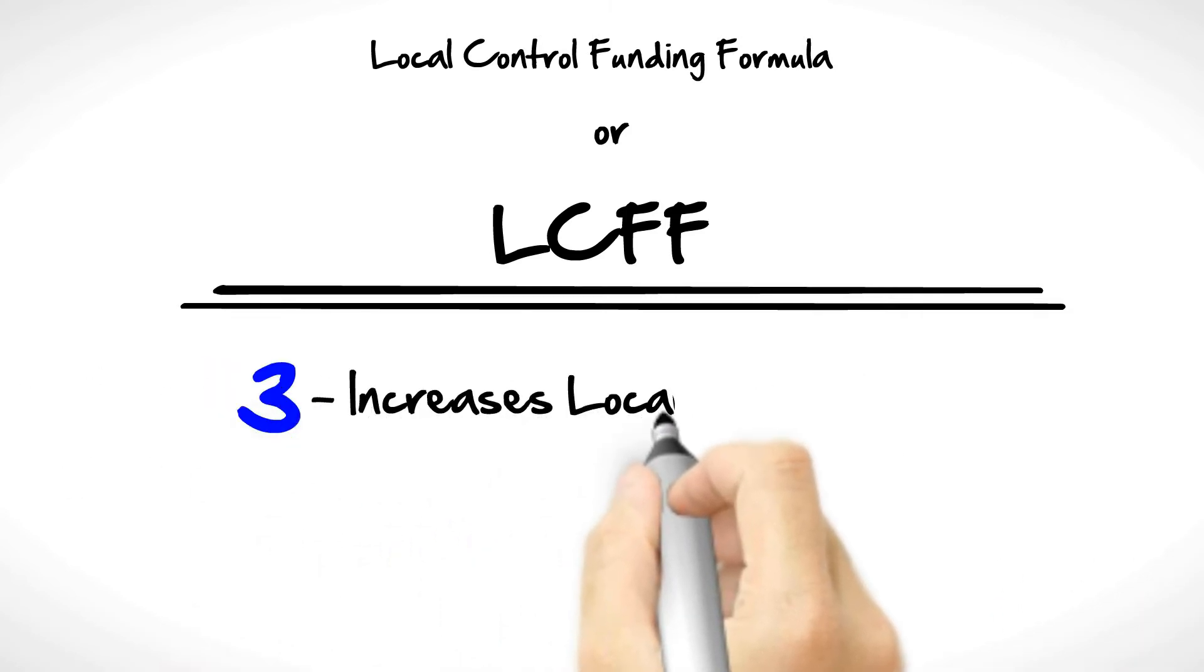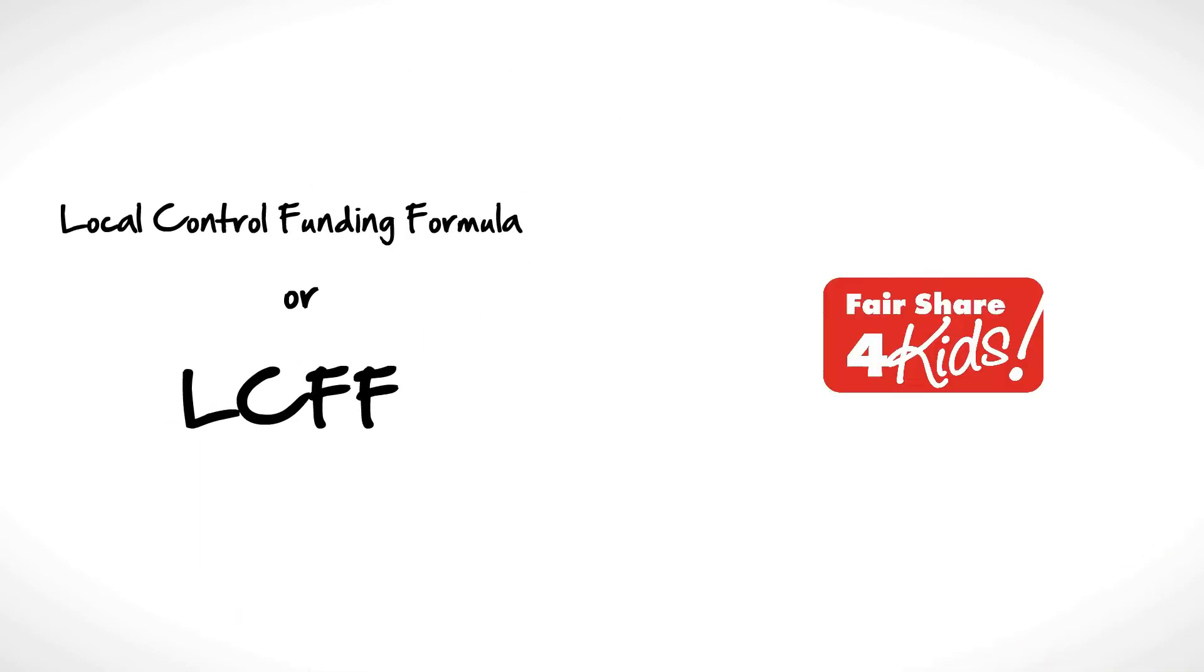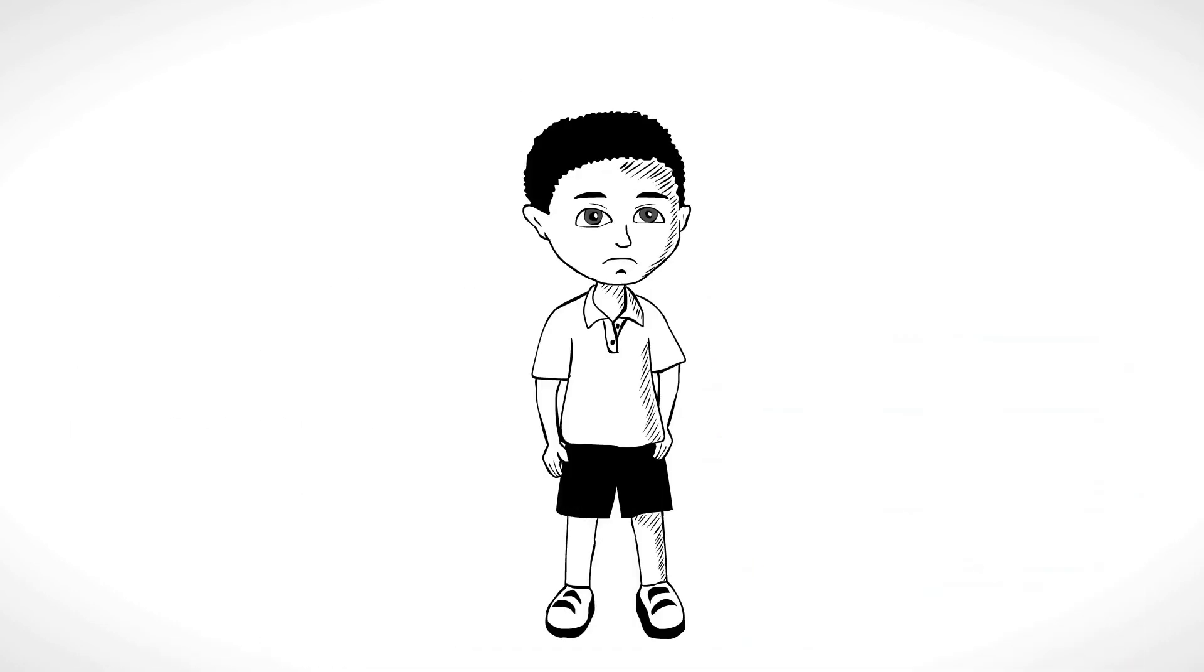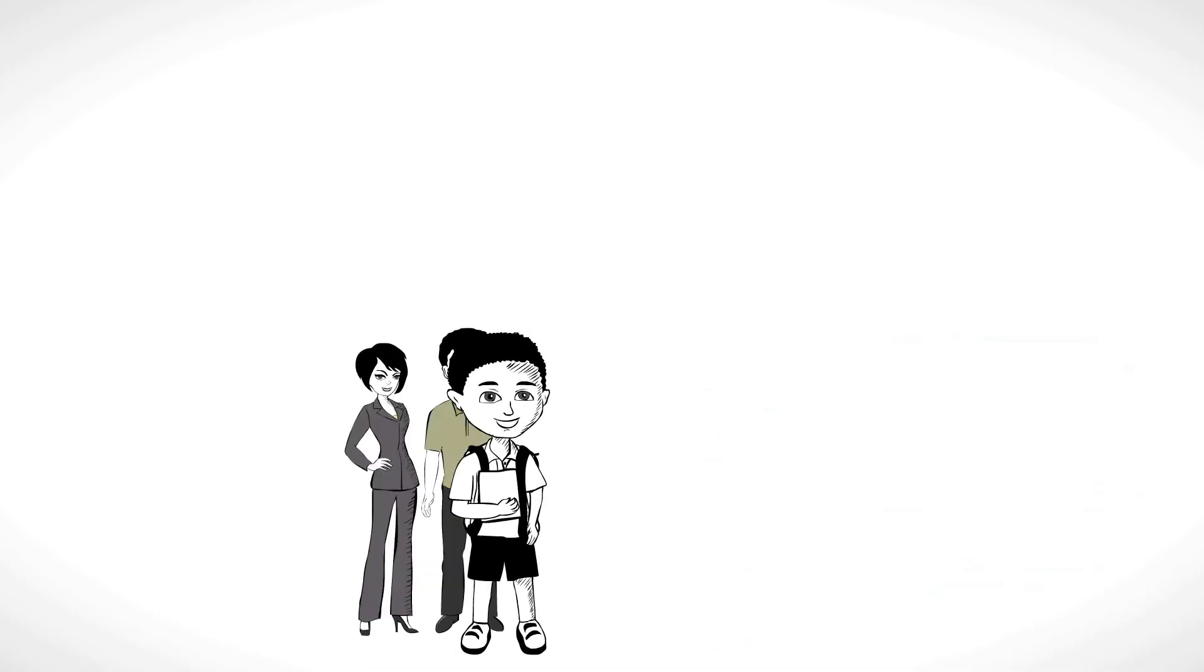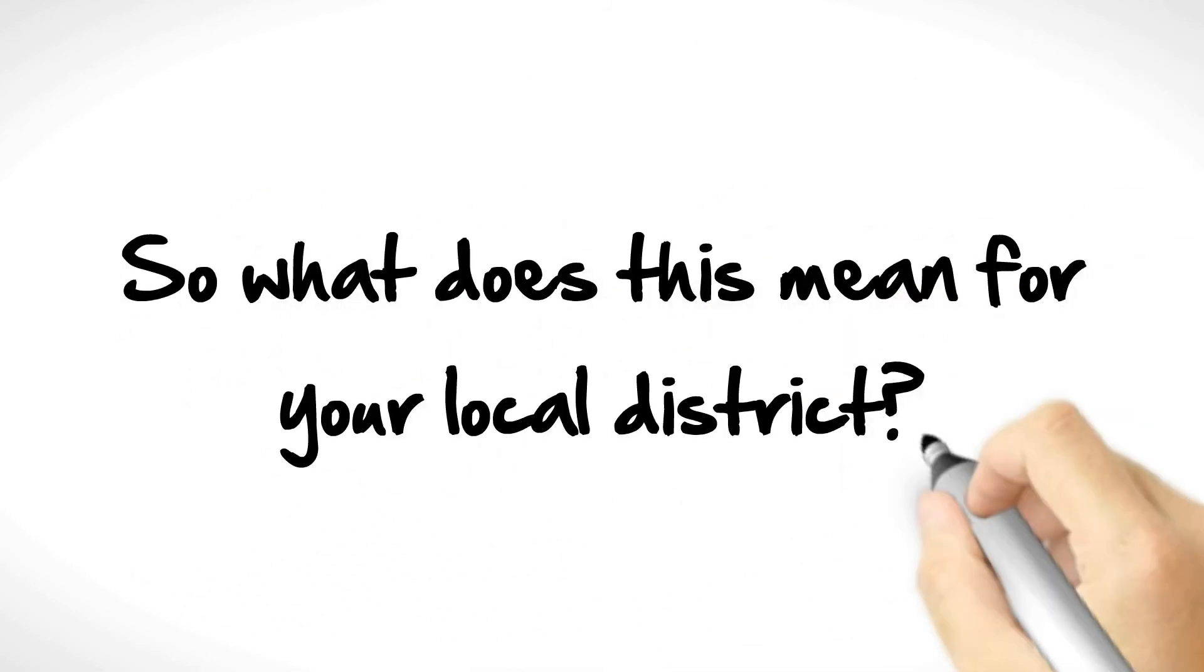Third, increases local control, giving local school districts more options on how to best use funds. Fair Share for Kids supports this plan so long as low-income students receive the support they need and parents have a voice on how monies are spent. So what does this mean for your local district?